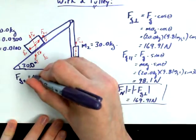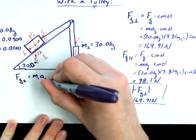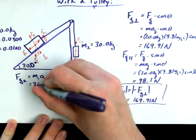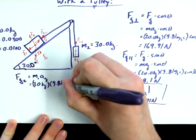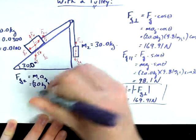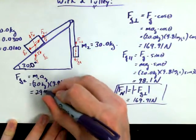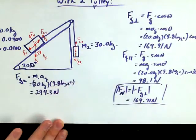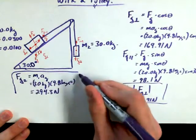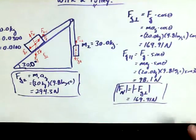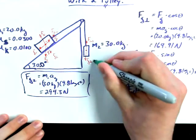FG2, so 30 kilograms times 9.81. What was it? I got 294.3. 294.3 newtons. That sounds good.